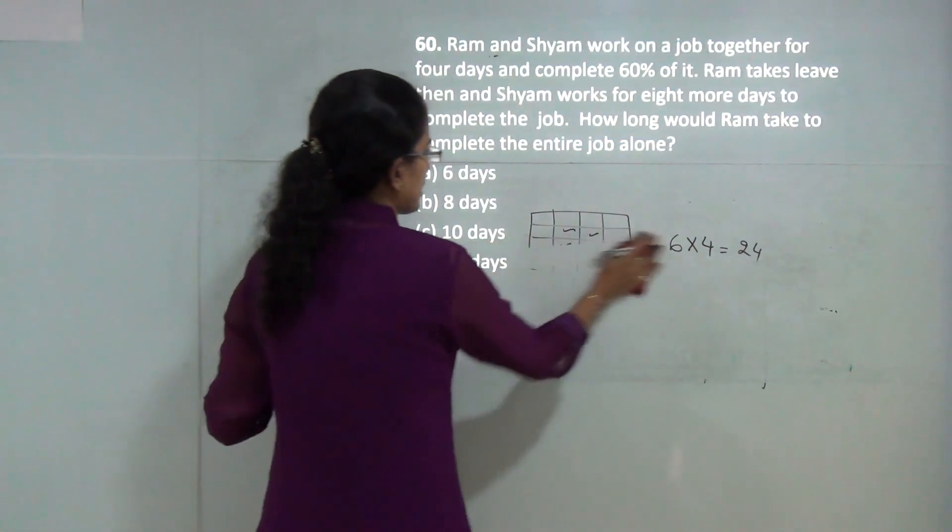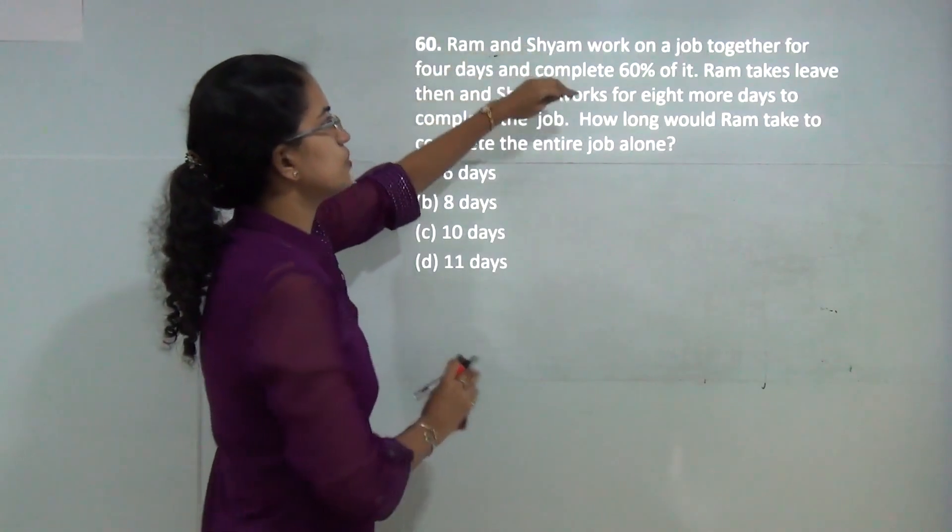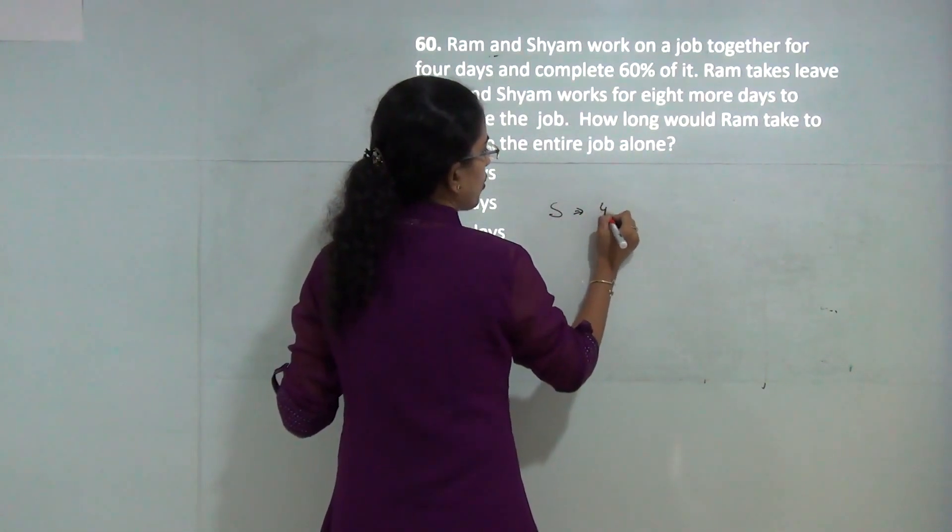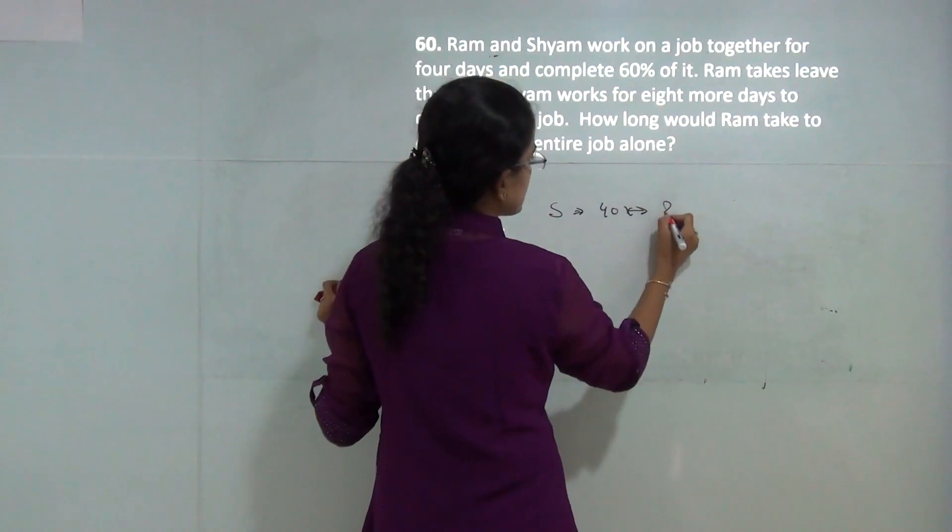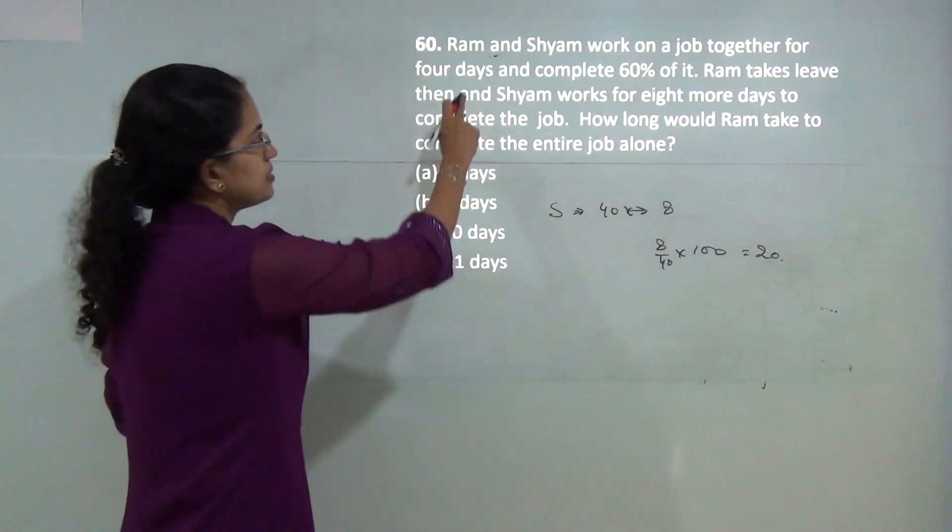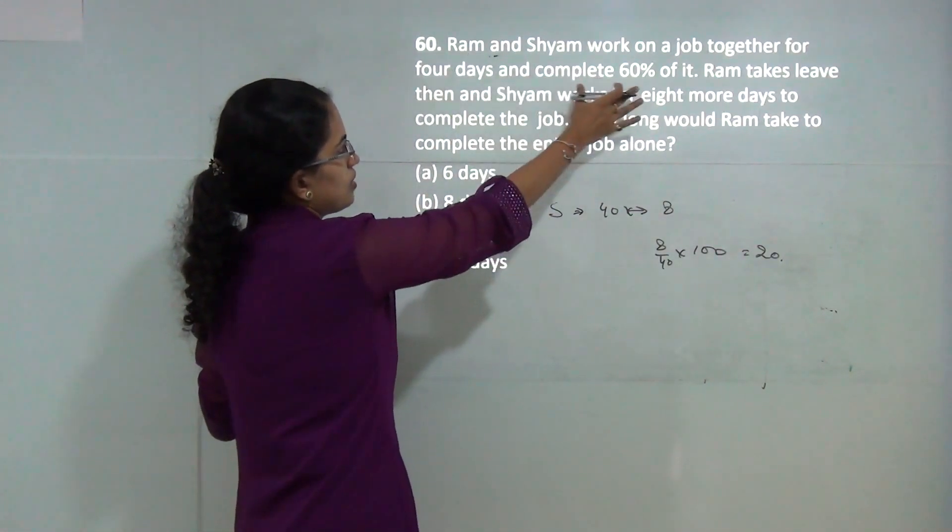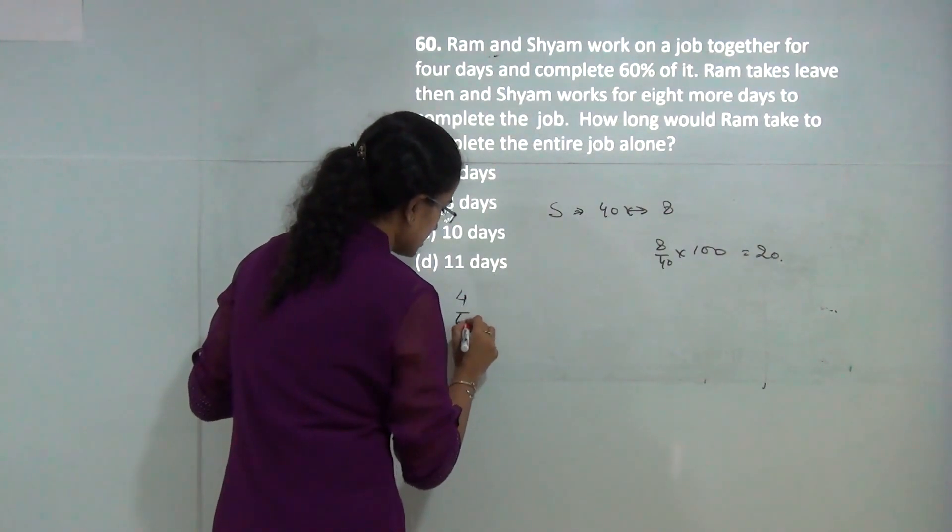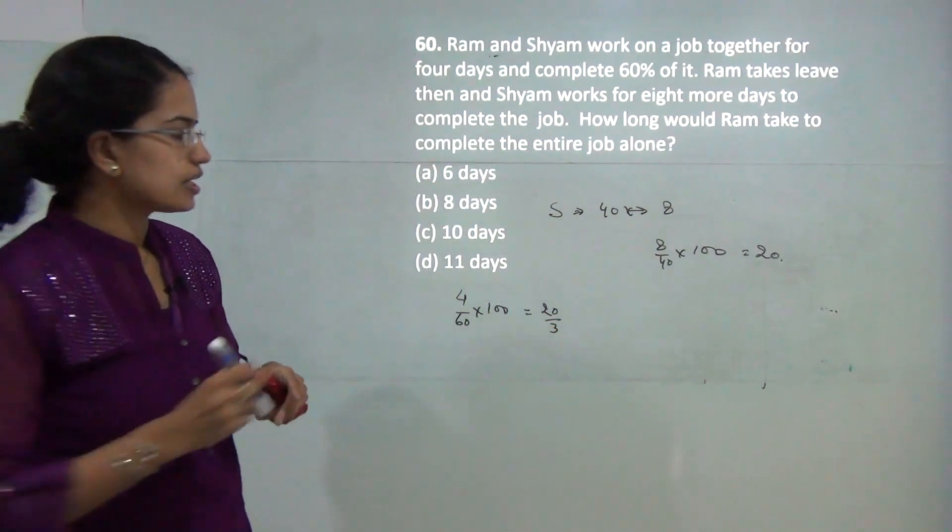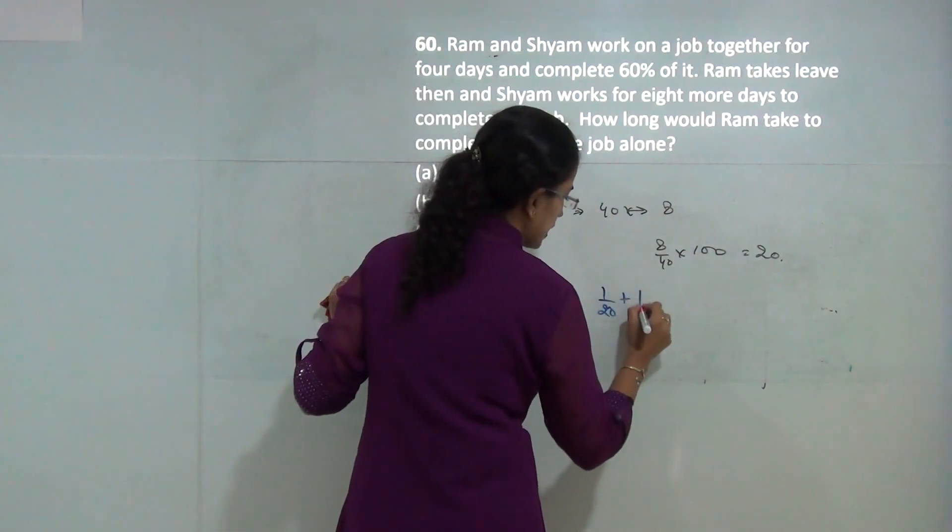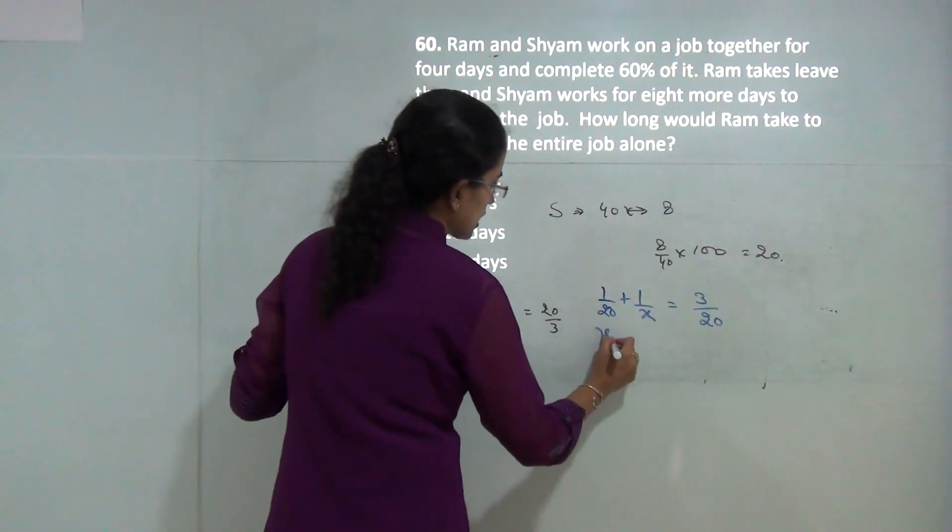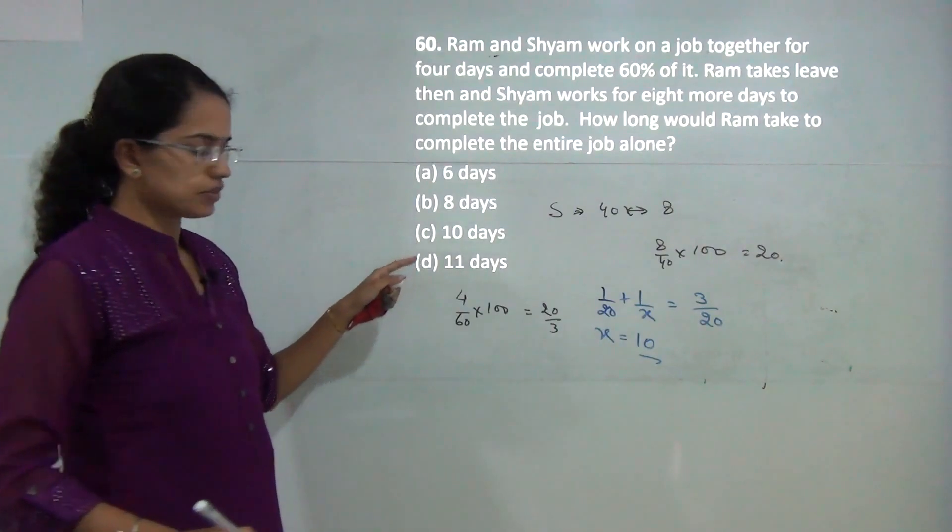This is a combined rate problem. Shyam and Ram together do 60% of a job in 4 days. Shyam alone does the remaining 40% in 8 days. So 8 by 40 times 100 equals 20 days for Shyam. For the combined rate, 1 by 20 plus 1 by X equals 3 by 20. Solving for X gives 10 days for Ram alone.